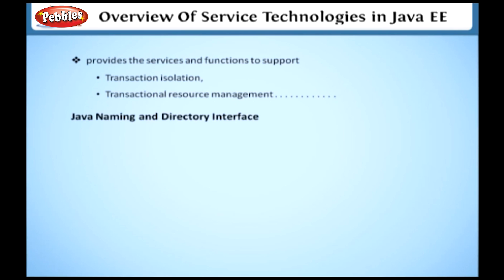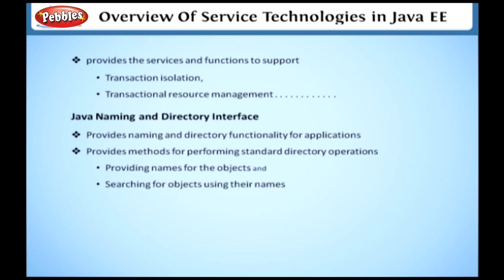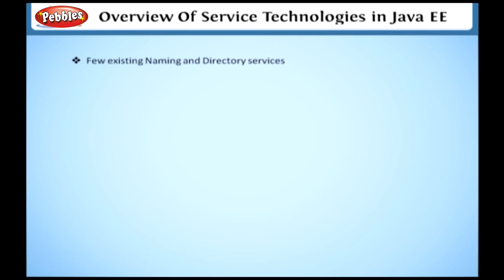Java Naming and Directory Interface. The Java Naming and Directory Interface, or JNDI, API provides naming and directory functionality for applications. It provides methods for performing standard directory operations, such as providing names for objects and searching objects using those names. Using JNDI, an application can store and retrieve any type of named Java object. The existing naming and directory services in use are LDAP, NDS, DNS, and NIS.